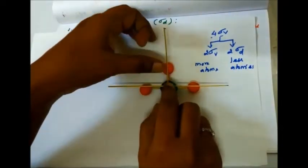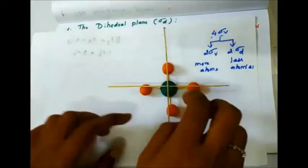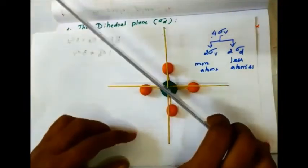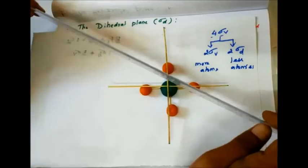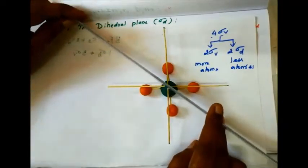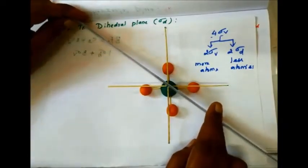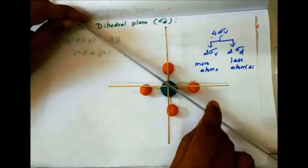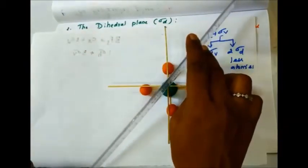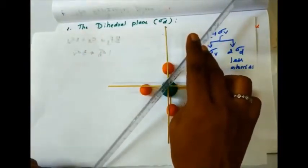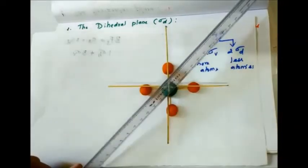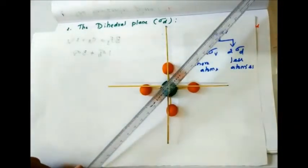We have 2 C2 axes, but sigma d passes through the less number of atoms. Sigma v passes through more atoms, and sigma d passes through less atoms along the vertical plane. This is the principal axis.